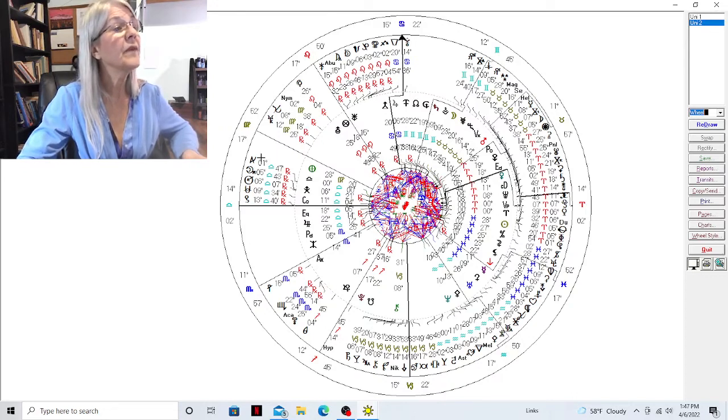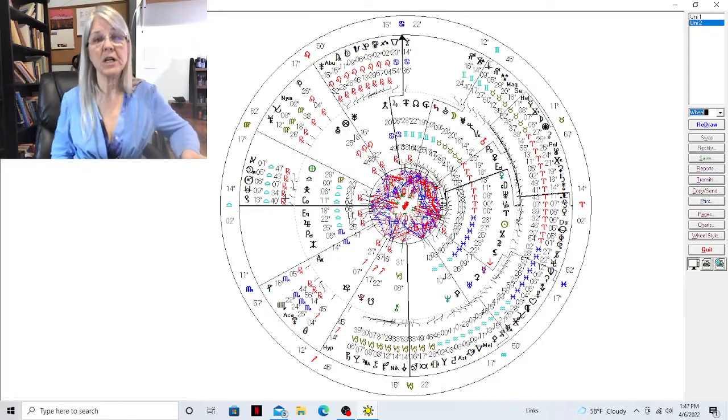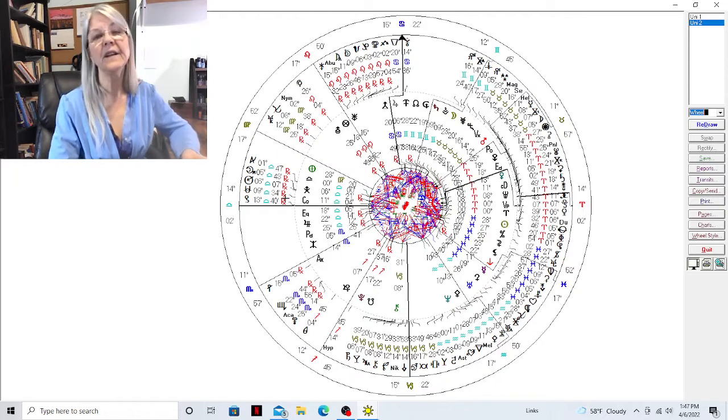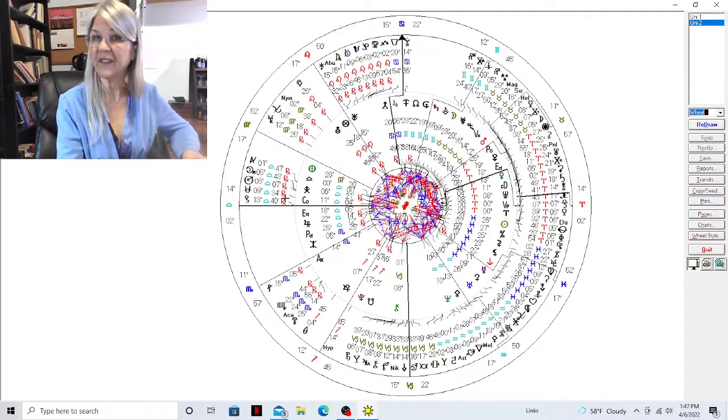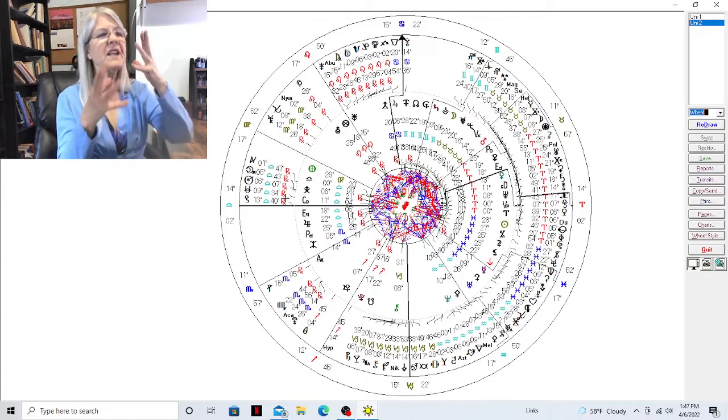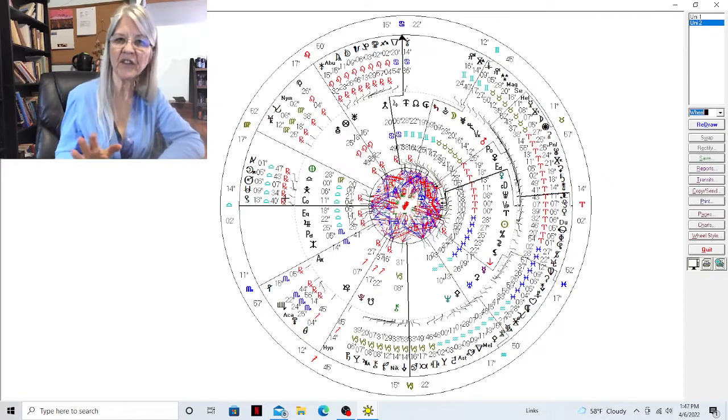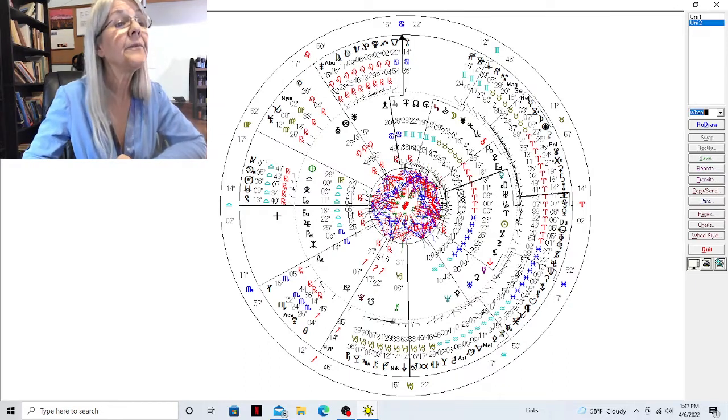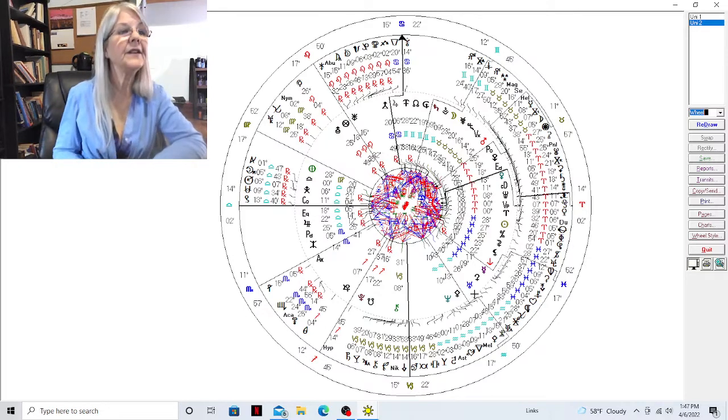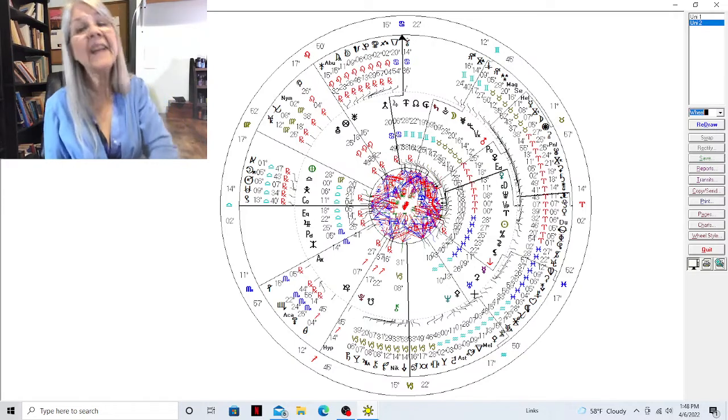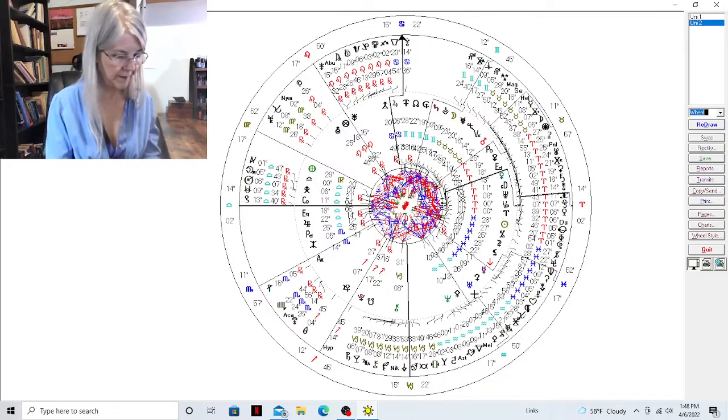As we would look at the opposite, you have Nemesis at 9 degrees 34. Something that's going on in the environment, something that's happening is nemesis opposite our very first head asteroid.